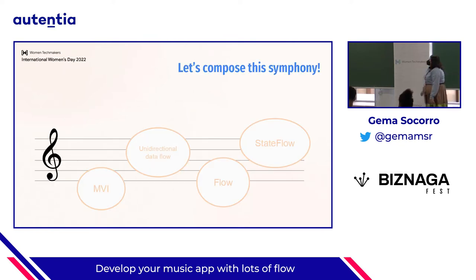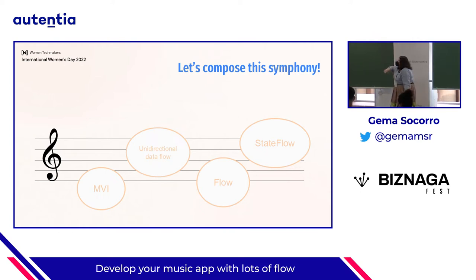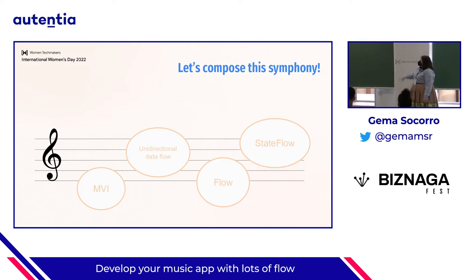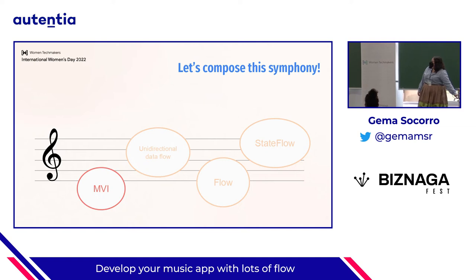So let's compose the symphony today. I'm very sorry if there is any musician here because this is kind of an aberration, but we are going to see what MVI is and what unidirectional data flow is — a concept that is very related with MVI. We will see what the API of Flow can give us, and also what StateFlow is, and we are going to compose this MVI architecture.